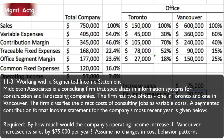A segmented contribution format income statement for the company's most recent year is given, and I've replicated that on the screen. We see our total company along with everything expressed as a percentage of sales, broken down by both Toronto and Vancouver with the same percentage of sales breakdown as well. Required number one: by how much would the company's operating income increase if Vancouver increased its sales by $75,000 per year?